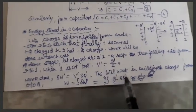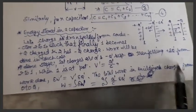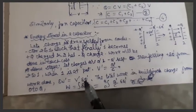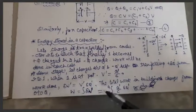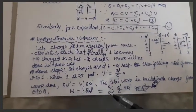This is only for transfer of small charge delta q dash. Now if we consider the whole charge, that means from zero to final value q, how much work has been done?